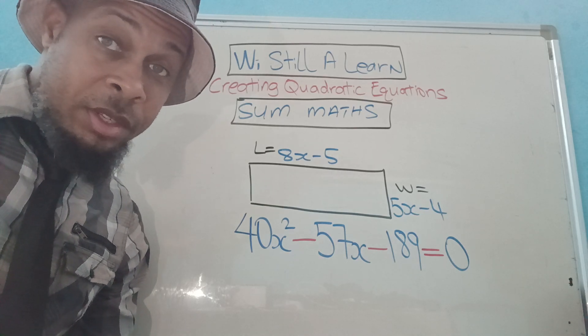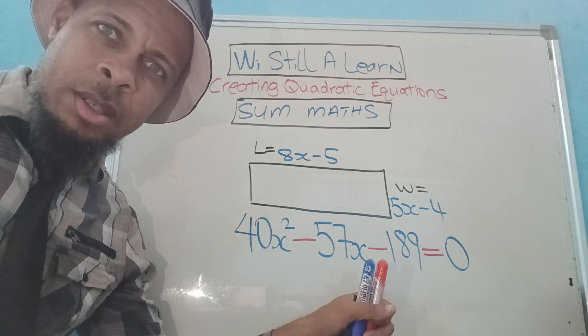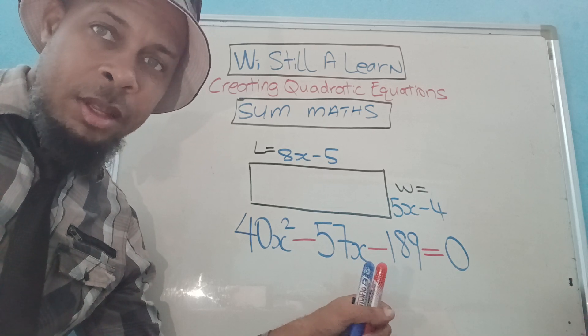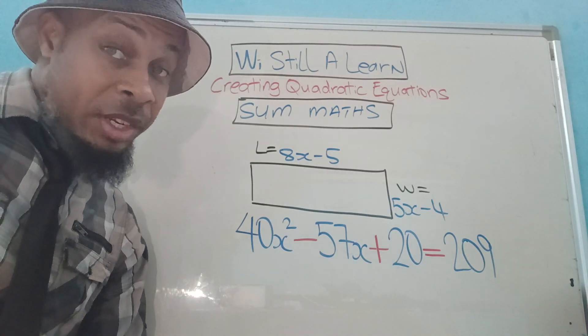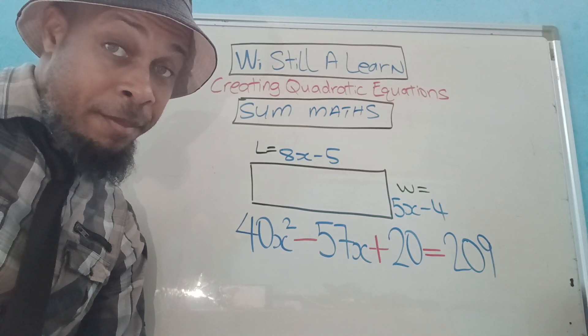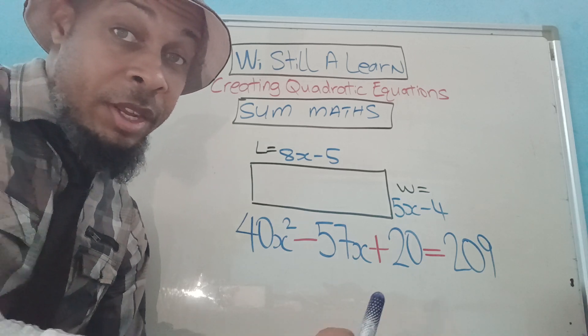Not sure if you noticed, but I made a bit of a mistake. I'll tell you what happened. See, this is what happens when you skip steps. Originally, you had 40x squared minus 57x plus 20.